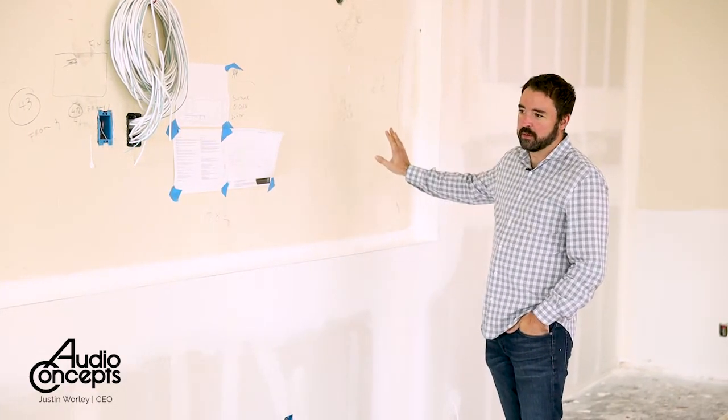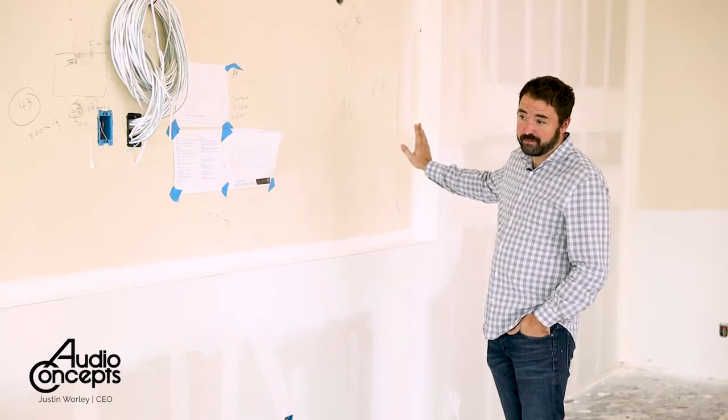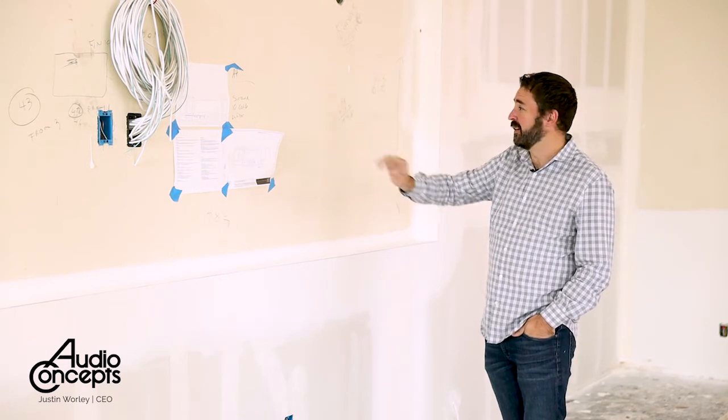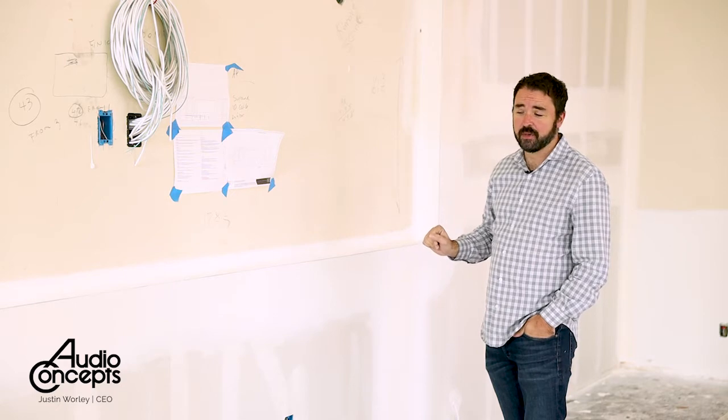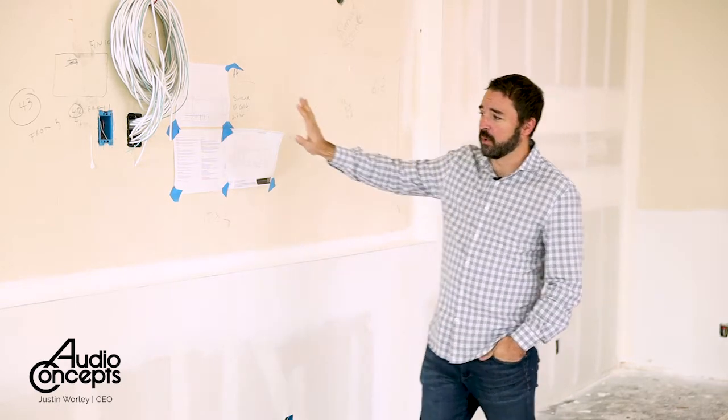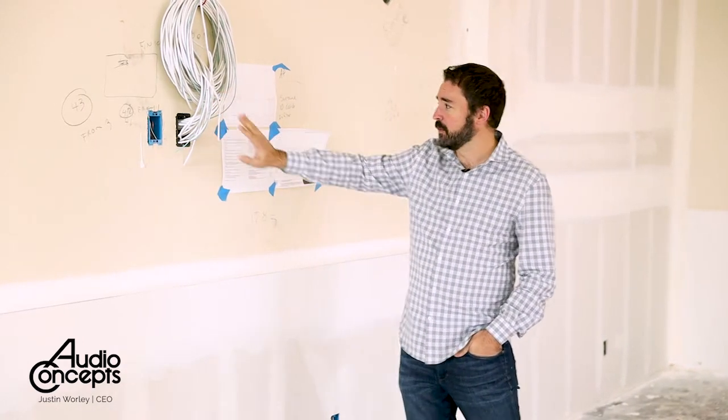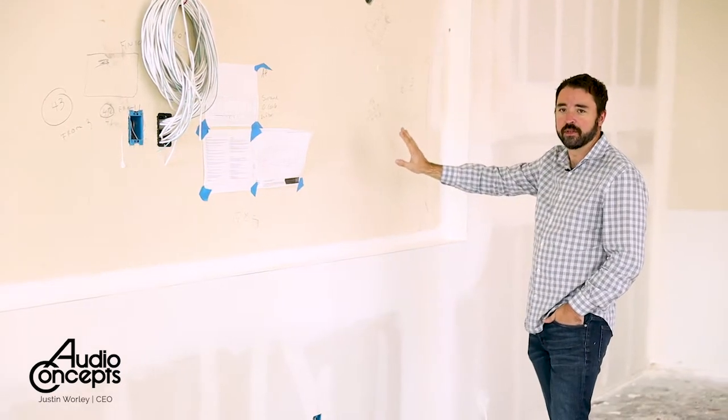So the idea here is that we can watch one movie on about a 160-inch diagonal screen, or if we want to watch football games, we can watch a single football game here and maybe two or three over here on this side of the screen.